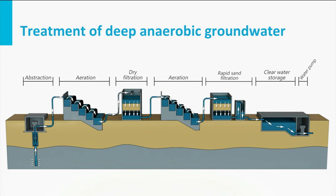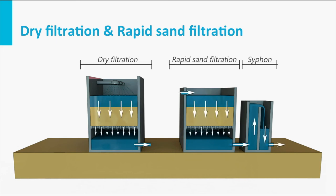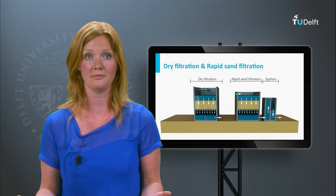A dry filter differs from a wet filter. In a dry filter, air passes along the sand grains together with the water, allowing oxygen in the air to replenish the oxygen in the water during filtration. Dry filtration is followed by submerged filtration, because in a dry filter the breakthrough of particles may occur.